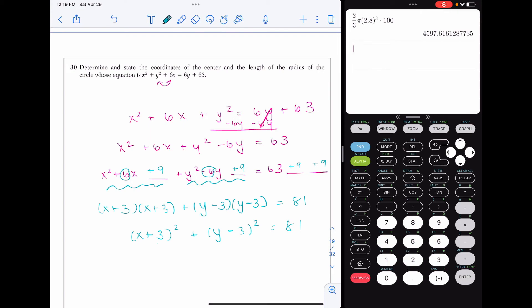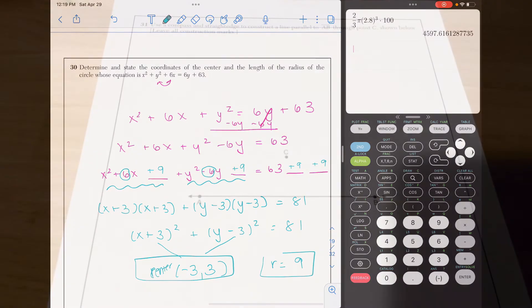Now to find the center, I'm going to take the opposite of the numbers in the parentheses. So that gives me negative 3, 3 as my center. For the radius, I'm going to take the square root of 81. So my radius is 9. Center is negative 3, 3. Radius is 9.